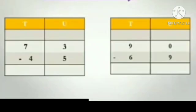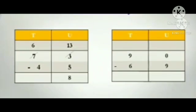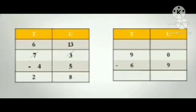Because we are borrowing one 10 from the tens place. And 10 plus 3 makes 13 units. So we cancel the 3 and write 13 on top, and 7 tens becomes 6 tens. Now students, take 13 fingers. 13 minus 5 is equal to 8. Now take 6 fingers. 6 minus 4 — the answer is 2. So 73 minus 45 is equal to 28.